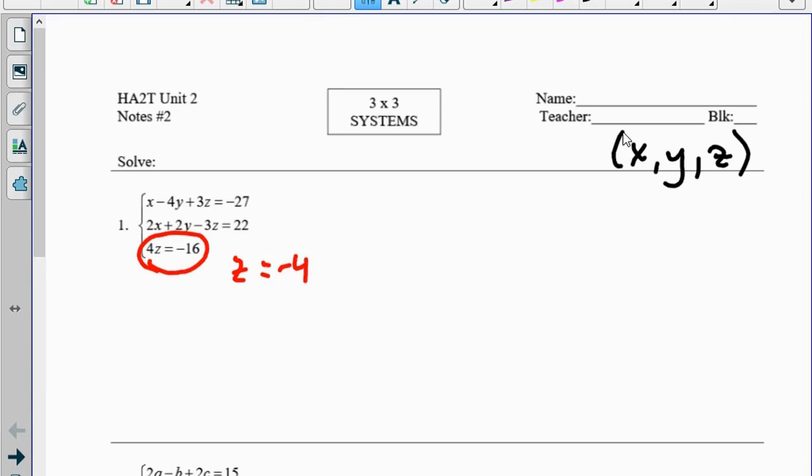Once I do that, I can then substitute negative 4 in everywhere else there's a z and solve things.